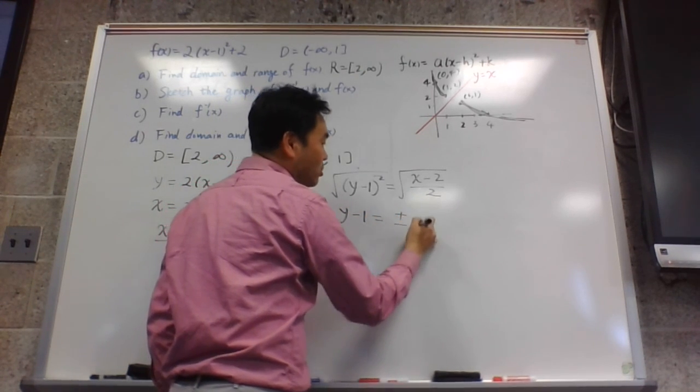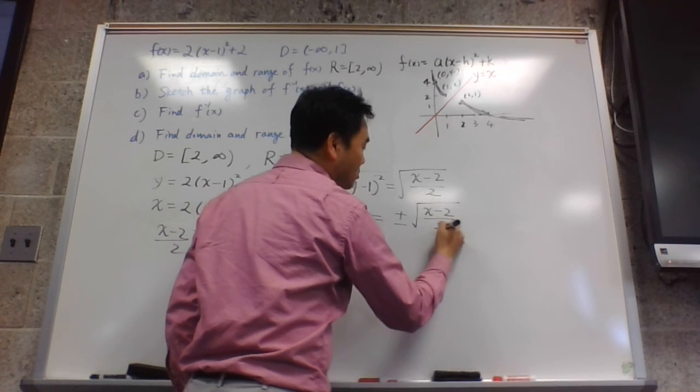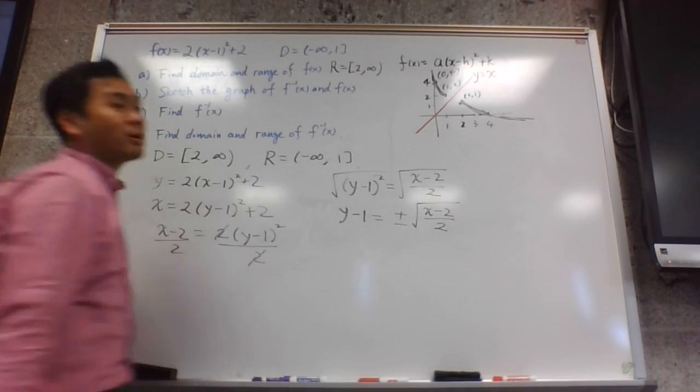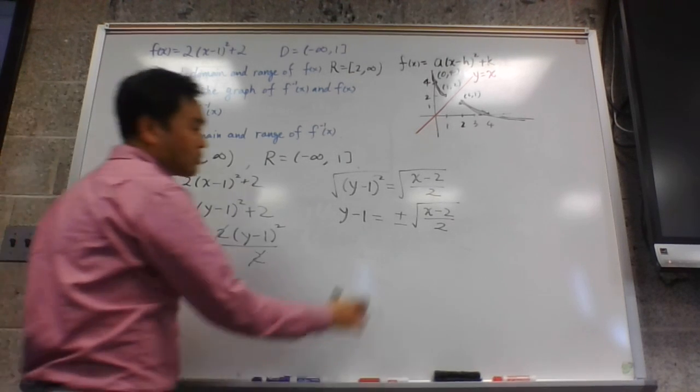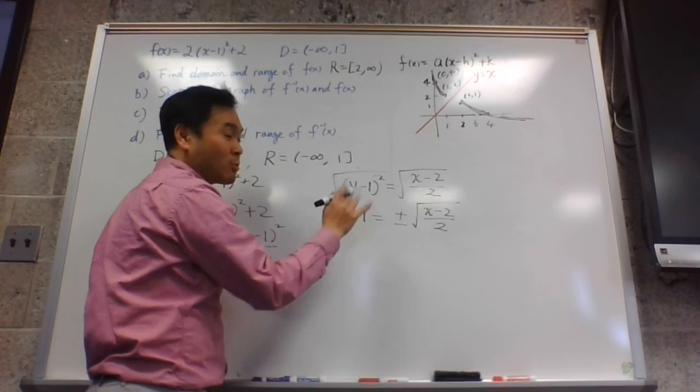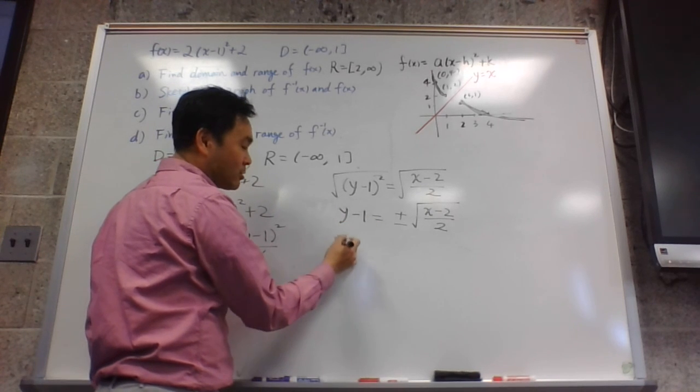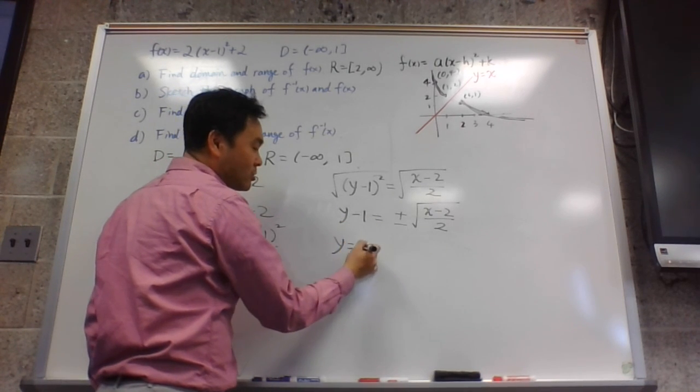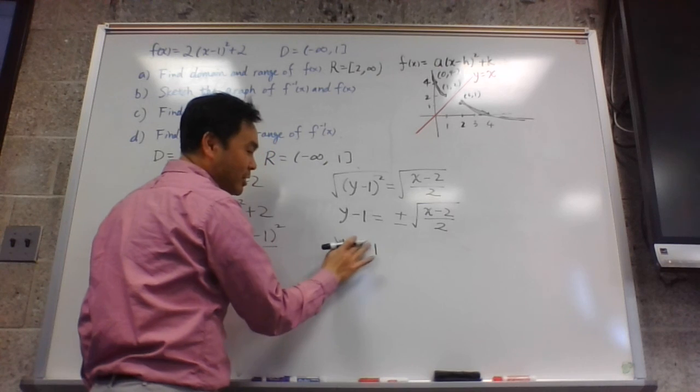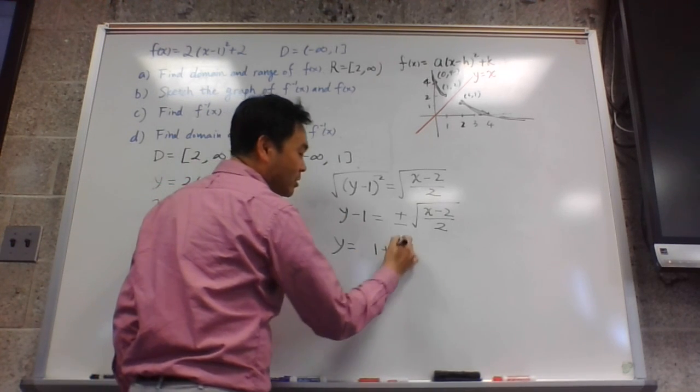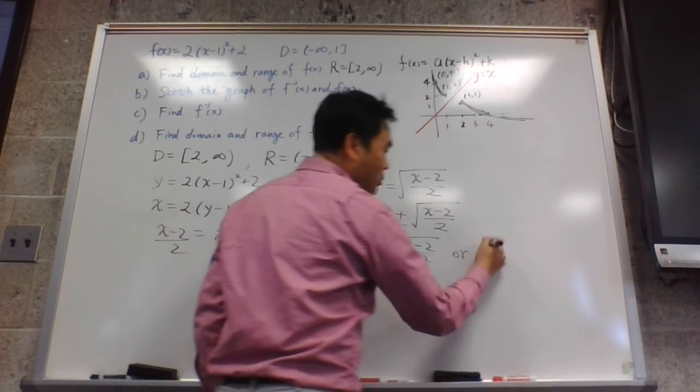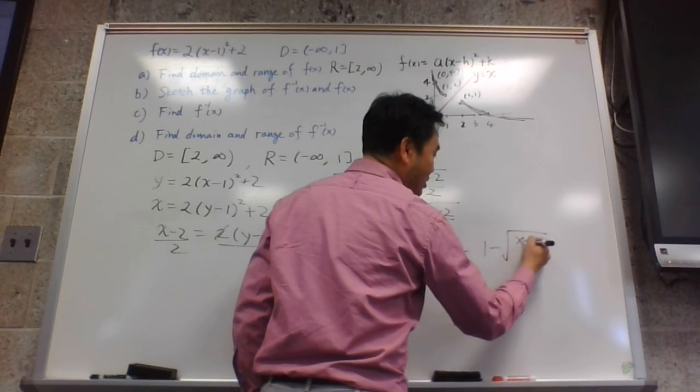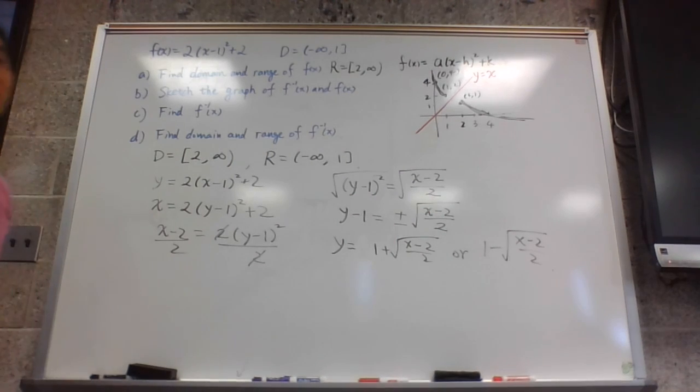And then to get rid of the square, you have to take the square root both sides. However, there's a problem. Whenever you take the square root, there's a choice that you have to make. Should you use plus or should you use minus? So let's hold off this decision for a moment and solve for y. So it's either y equals 1 plus radical (x minus 2) over 2, or 1 minus square root of (x minus 2) over 2. And the question is, which one's correct? Because it can only be one solution.